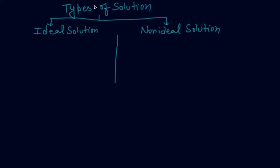Hello guys, now the types of solution. There are two types of solution: one is ideal solution, another is non-ideal solutions. Ideal solutions are those which obey Raoult's law, and non-ideal solutions do not obey Raoult's law.